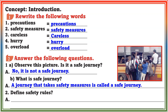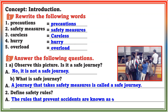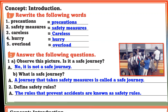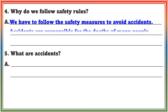Question 2: Define safety rules. Answer: The rules that prevent accidents are known as safety rules. Question 4: Why do we follow safety rules? Answer: We have to follow the safety measures to avoid accidents. Accidents are responsible for the deaths of many people.